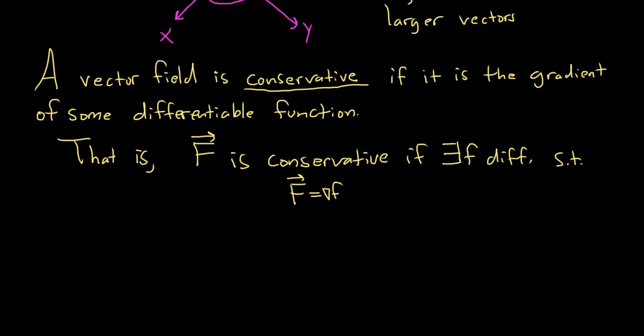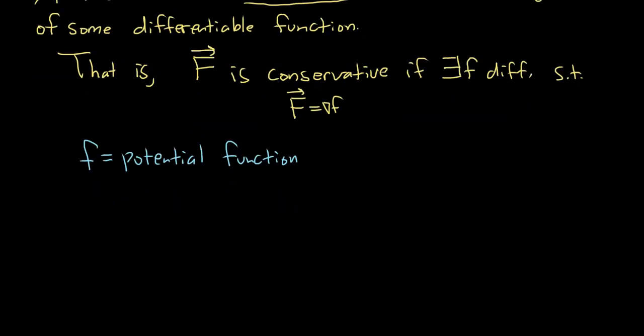Little f is called the potential function. The videos that follow will do plenty of examples of finding potential functions and determining whether a vector field is conservative. Gravitational fields are conservative, and electric force fields are conservative — it has to do with conservation of energy. If you take kinetic energy plus potential energy, it's constant, so the energy is conserved — hence the name conservative.